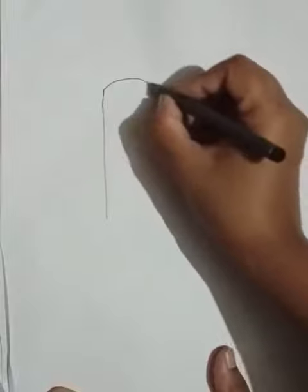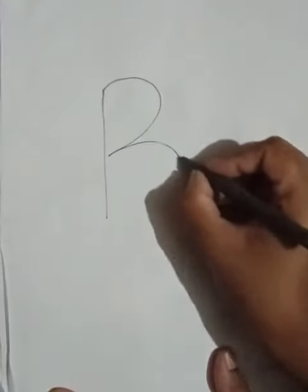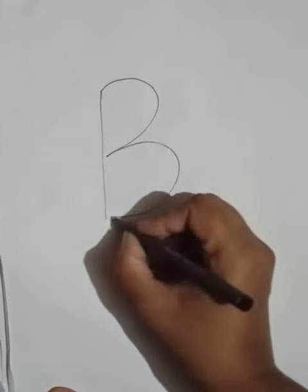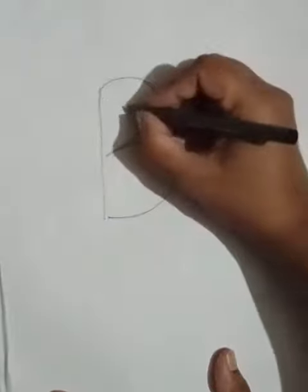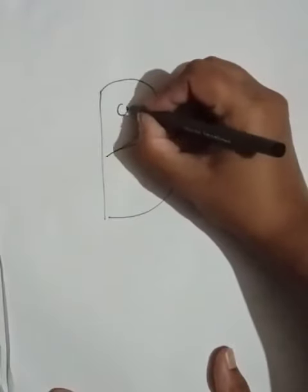Good morning students! Today I'll show you how to make a bird with the help of the alphabet B. Let's start the video. First of all, draw B like this. Next, make small eyes like this.